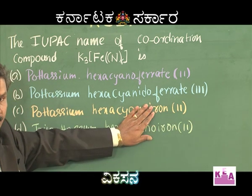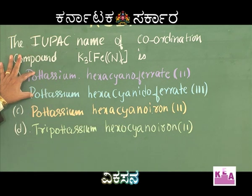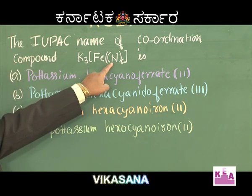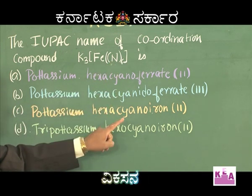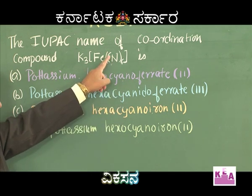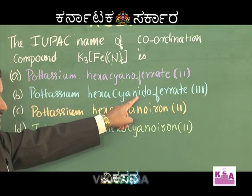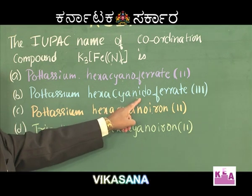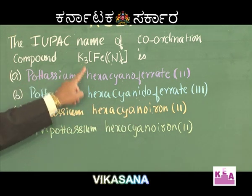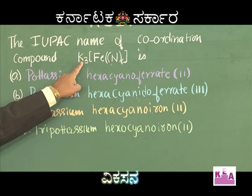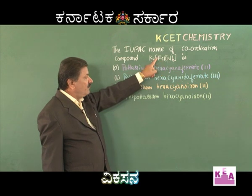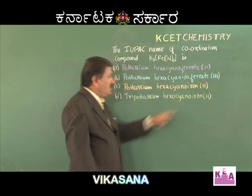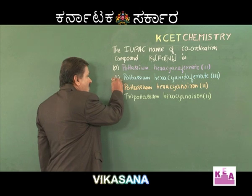The cyanide ligand is named in the IUPAC system as 'cyanido', not 'cyanone'. Option B has the correct name 'cyanido'. Therefore, the correct name for this complex is potassium hexacyanidoferrate(3), and the correct option is Option B.